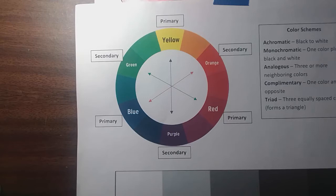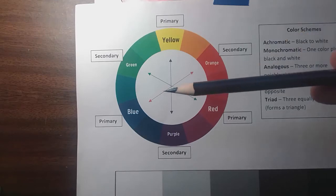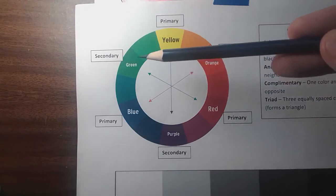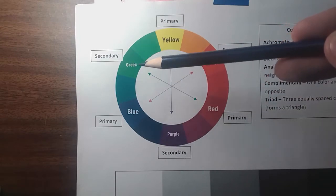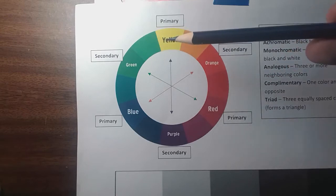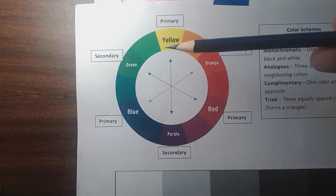For this first shape that I'm going to do, I'm going to be using an analogous color scheme that centers around green, meaning I'll be using blue, blue-green, green, yellow-green, and yellow in order to complete my form.